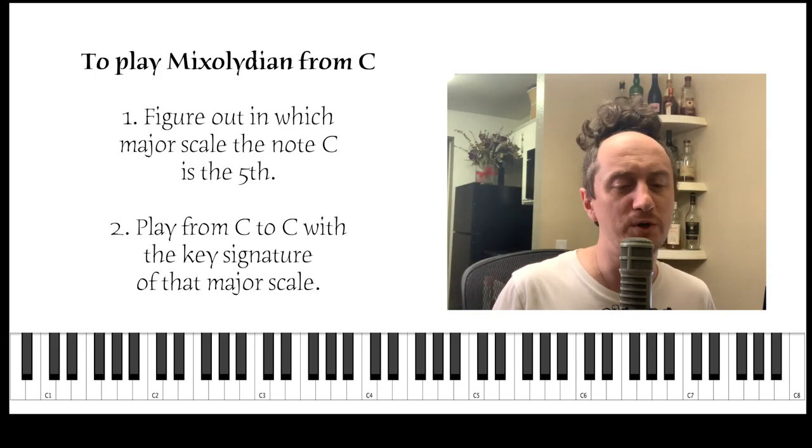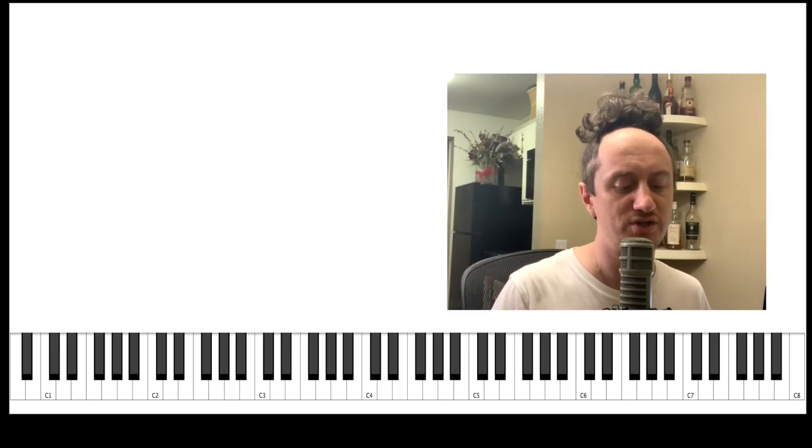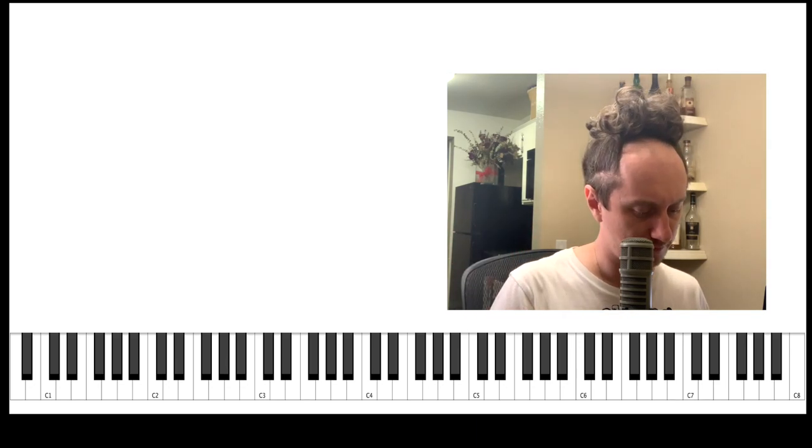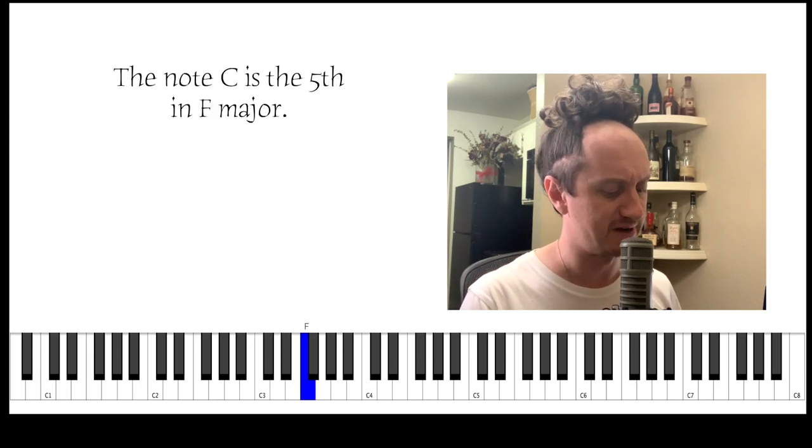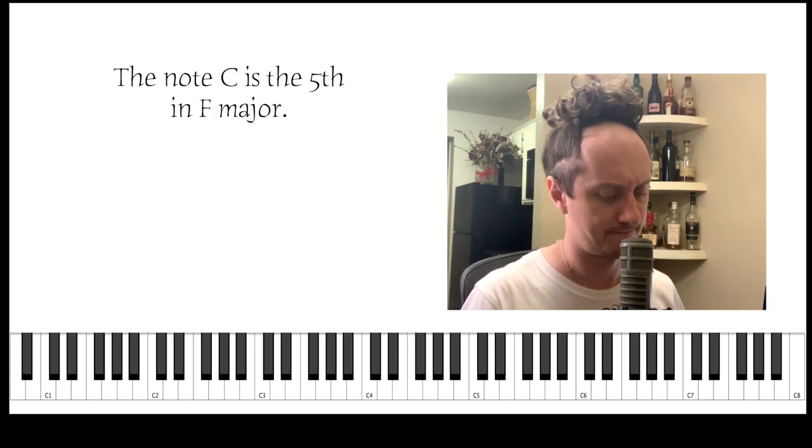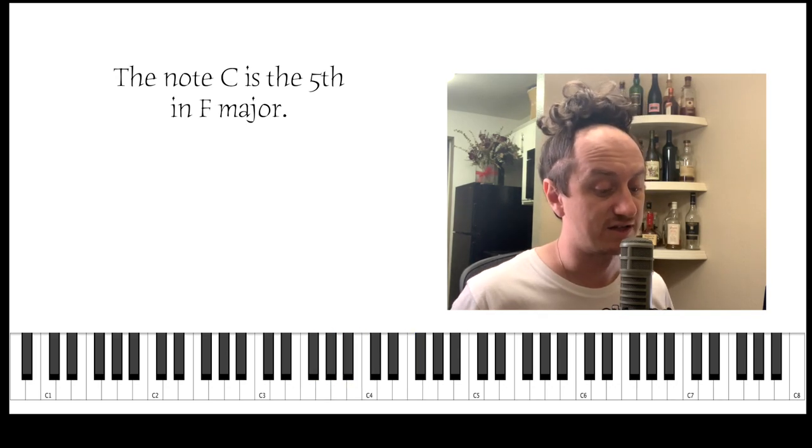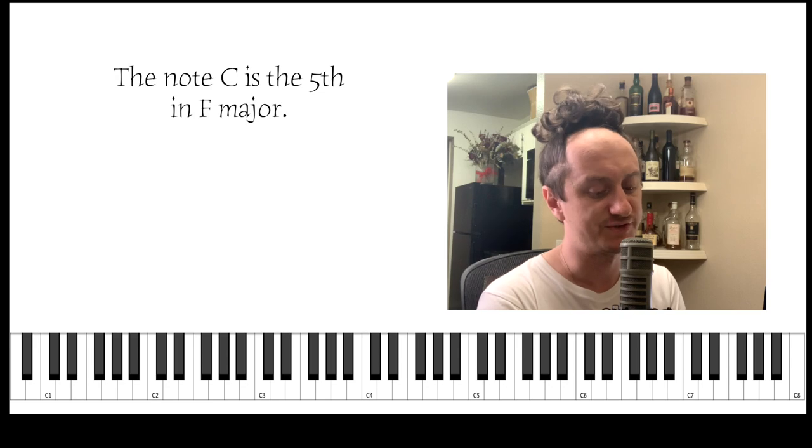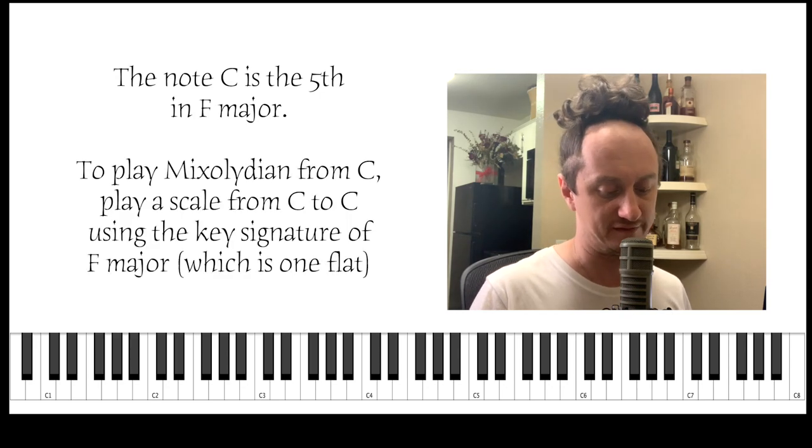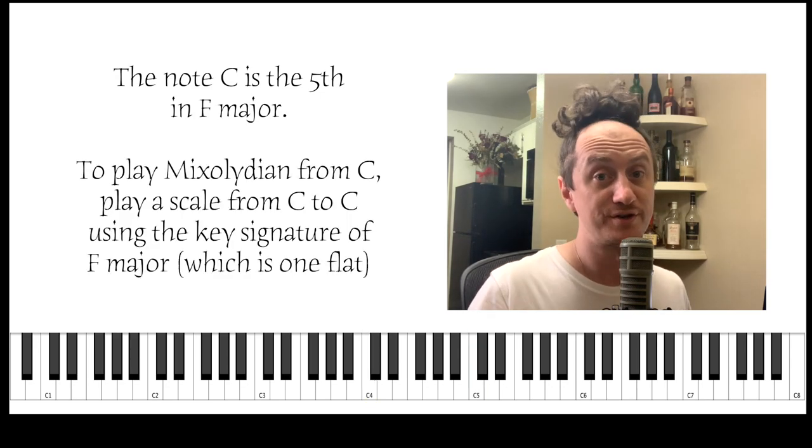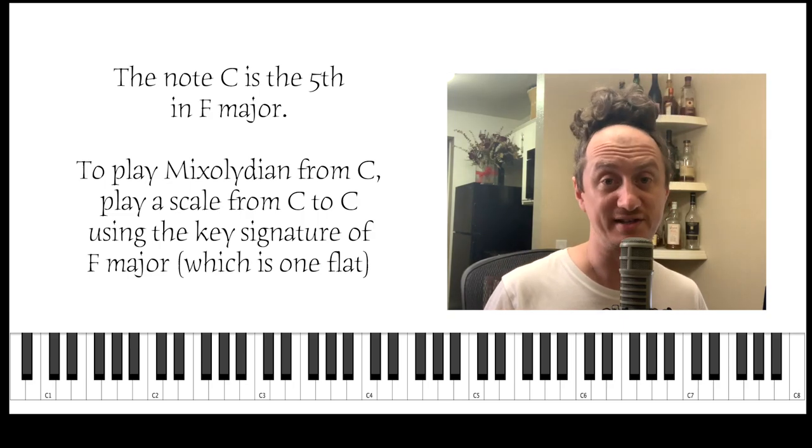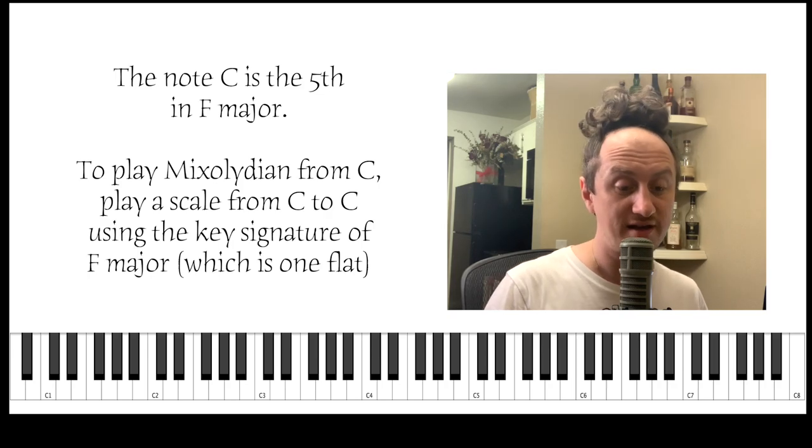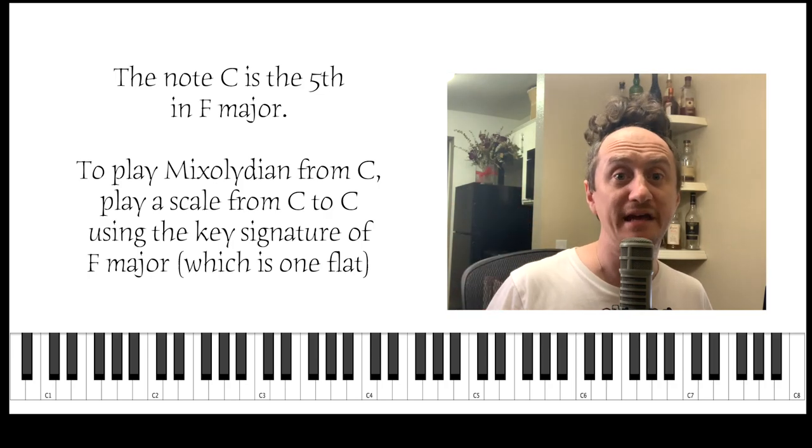So, in which major scale is the note C the fifth? Fifth below—in F major. Right? F, G, A, Bb, C. Great. So that means if we want to play Mixolydian from C to C, we need to play from C to C and use the key signature from the key of F, because Mixolydian is the fifth mode, and C is the fifth note in F.